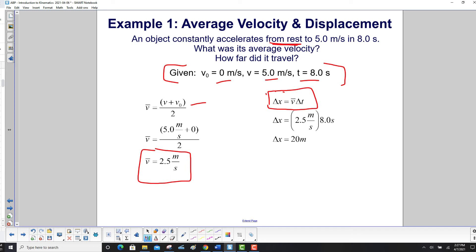Then we use our second equation. And we plug in 2.5 meters per second for the average velocity. Multiply it by the time, which is eight seconds. And then we get 20 meters for our travel or our displacement or our change in position. All the same thing.